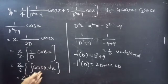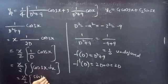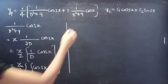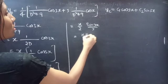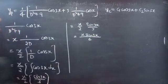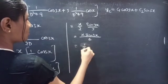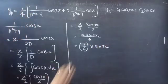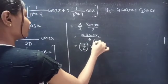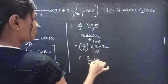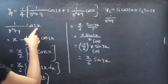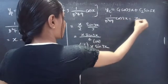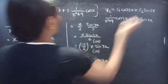So we compute (x/2)·∫cos3x dx = (x/2)·(sin3x/3) = x·sin3x/6. Therefore, 1/(D²+9)·cos3x = x·sin3x/6.